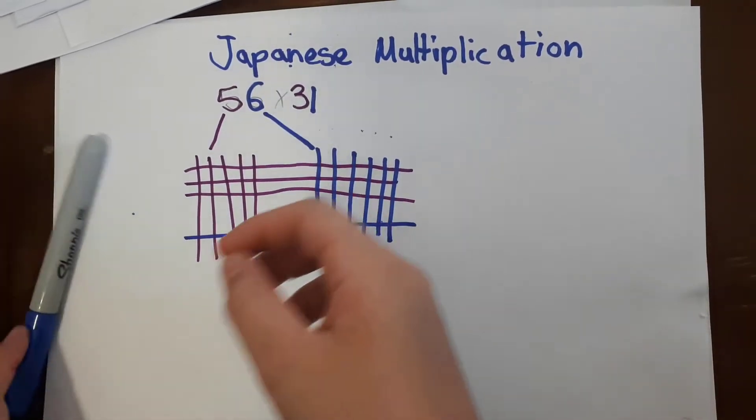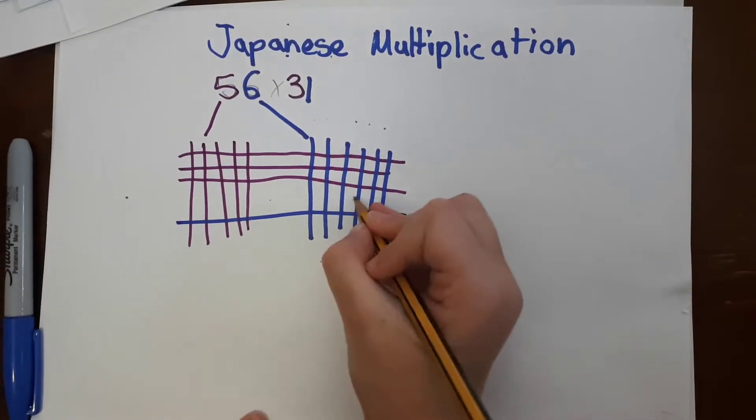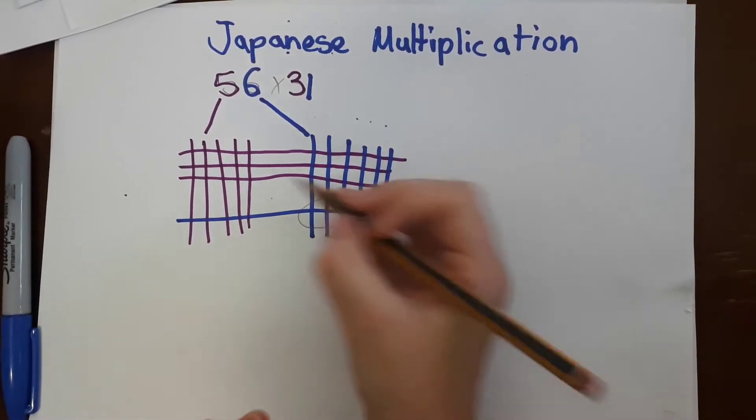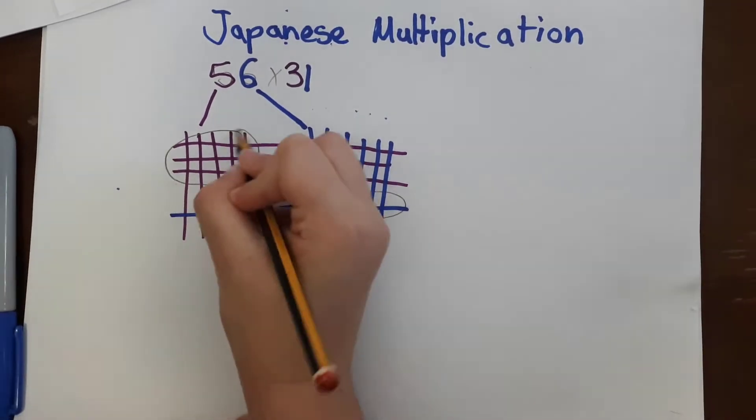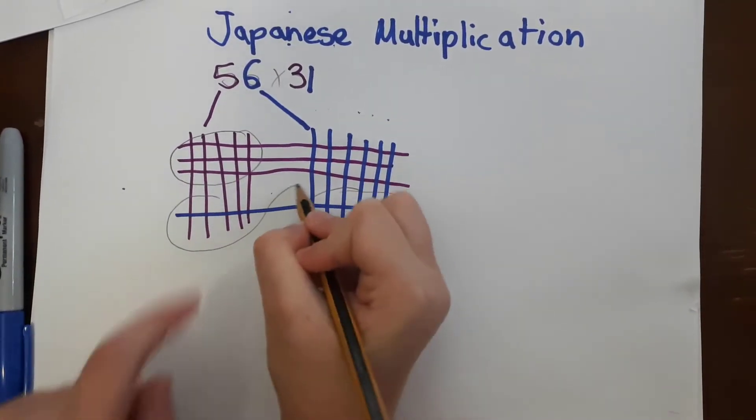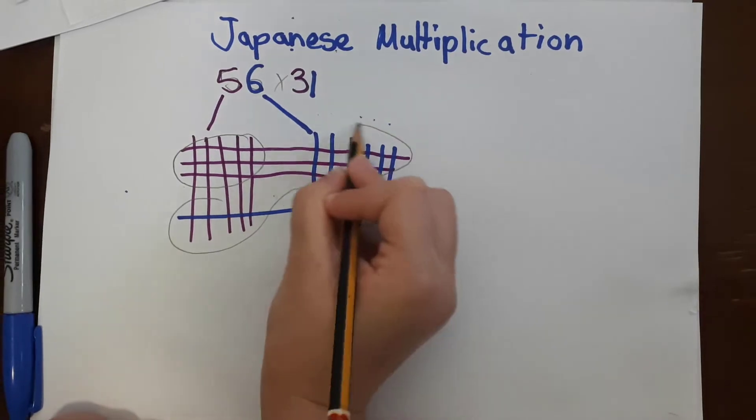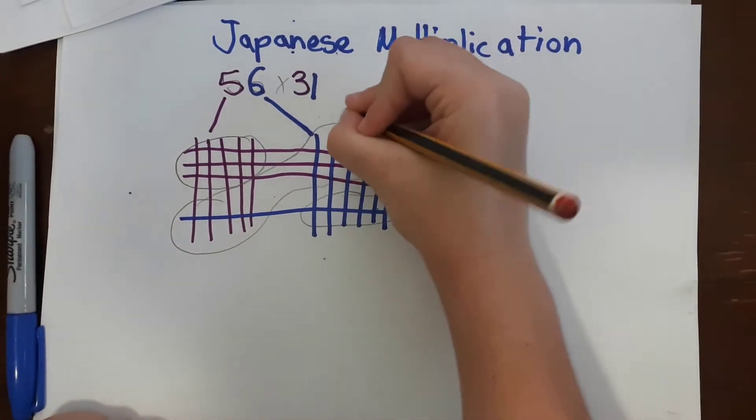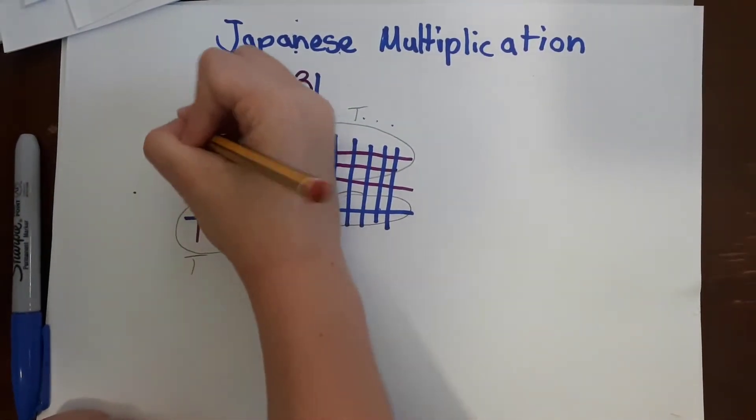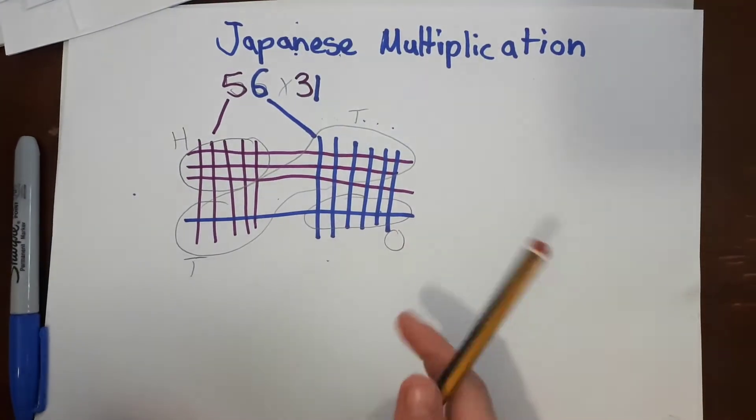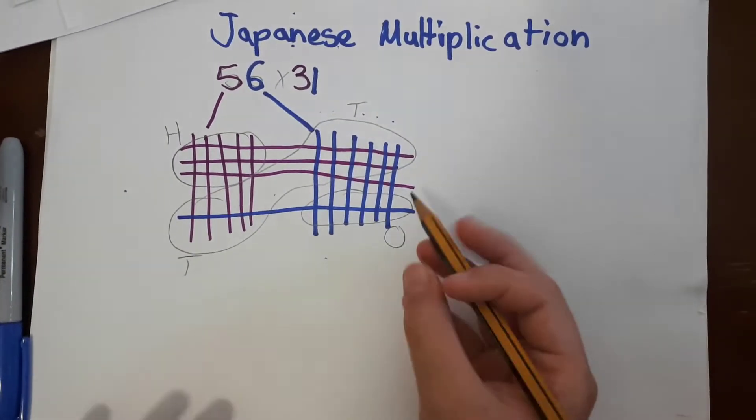So now we're going to circle the little intersections and then these are both tens. So these are going to be connected. So T for tens, H for hundreds and O for ones. So we'll do these first.